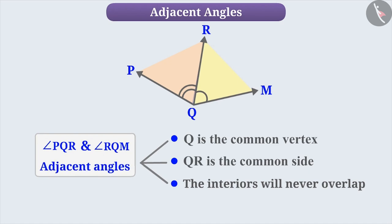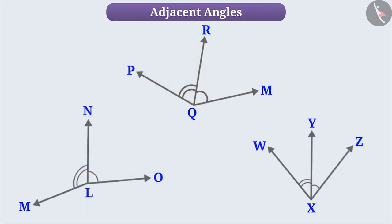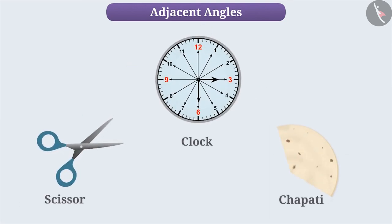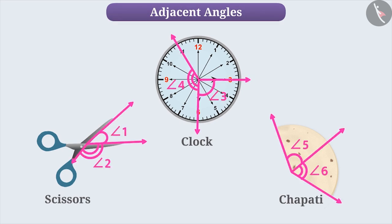Similarly, some more examples of Adjacent Angles are as follows. If you look around, you will find Adjacent Angles in many objects. Some of these examples are as follows. Can you think of some more examples like this? Give it a try.